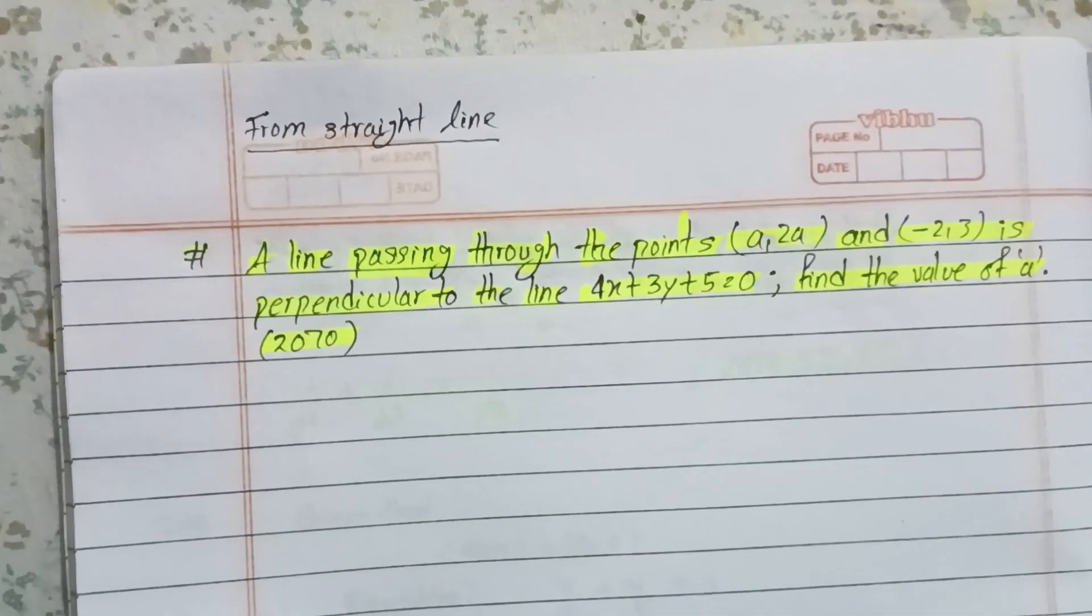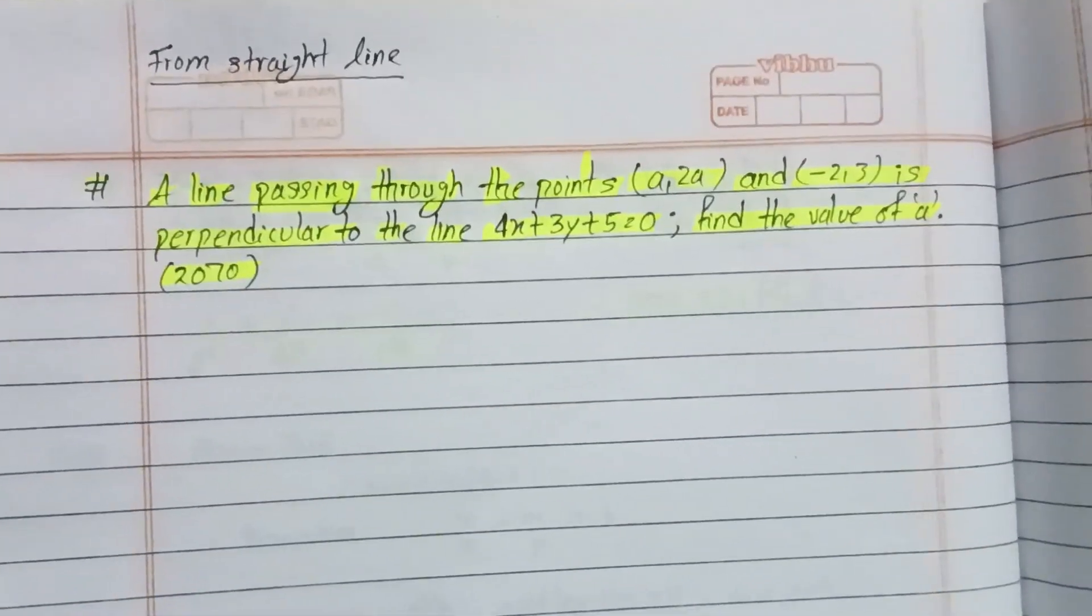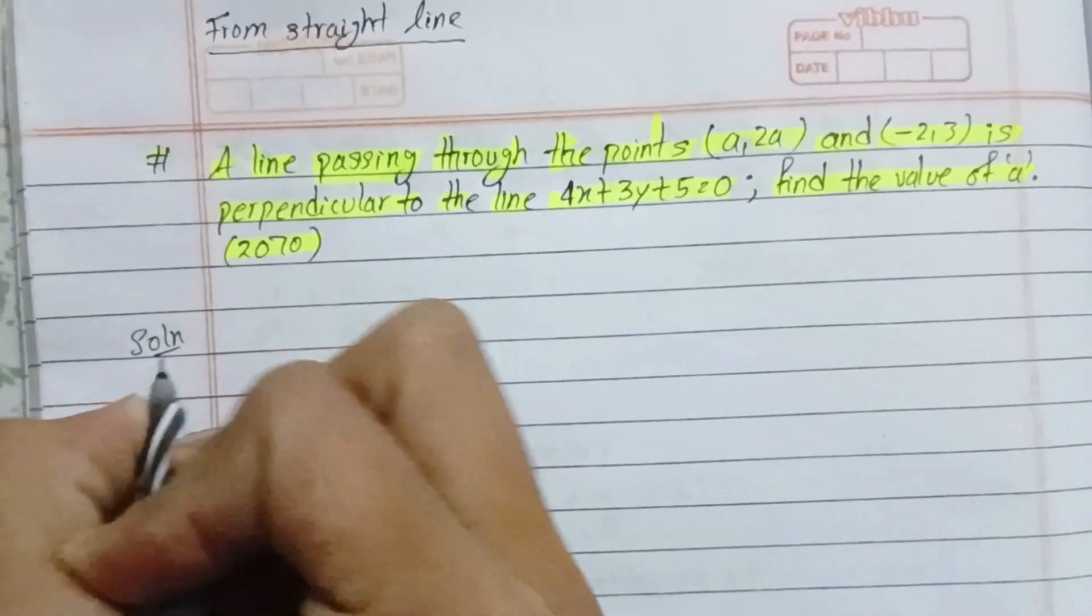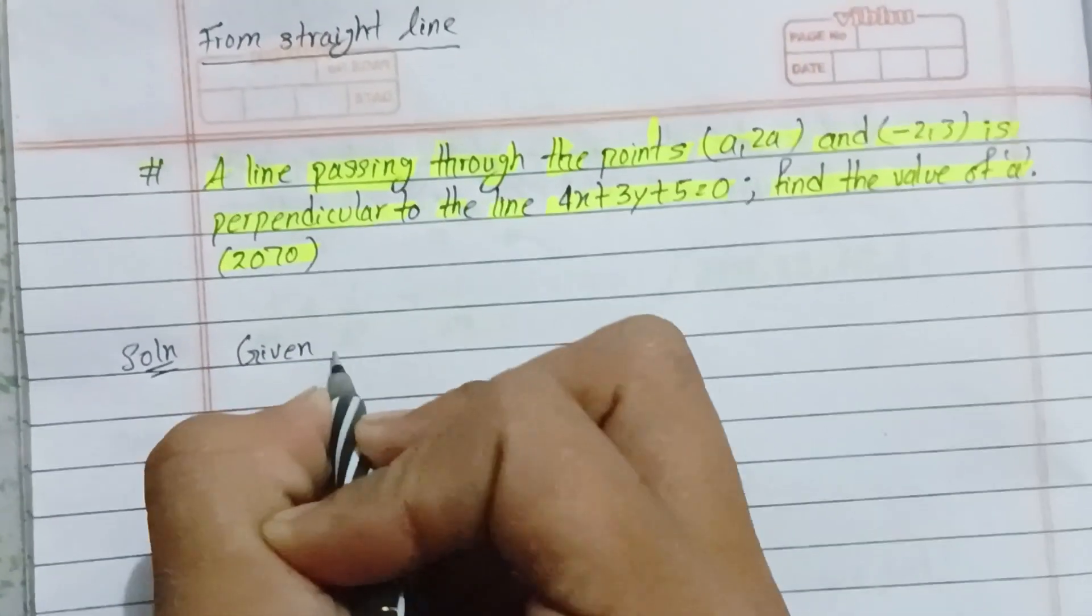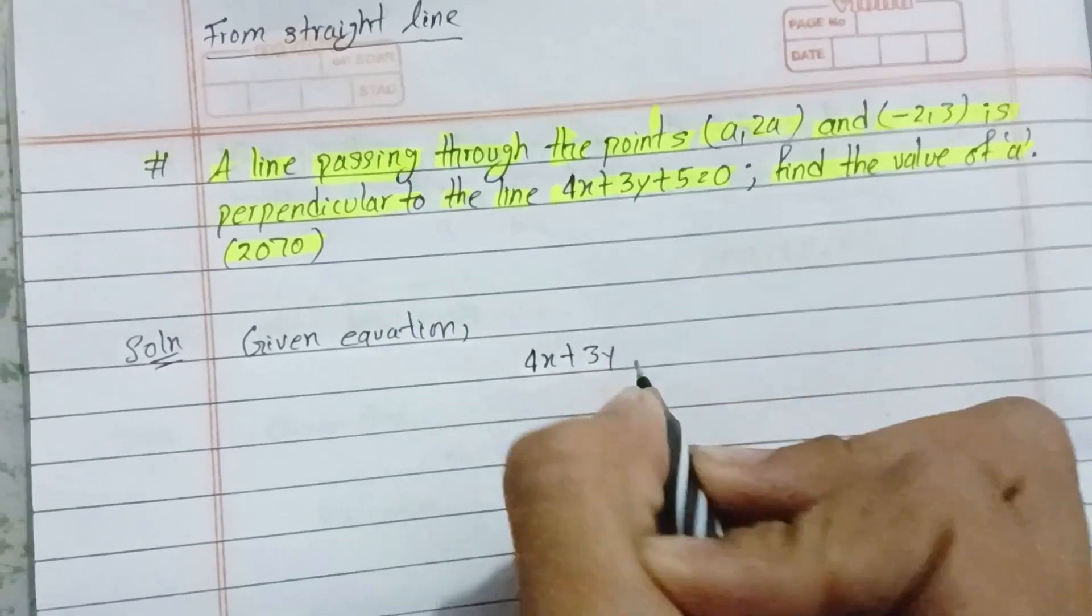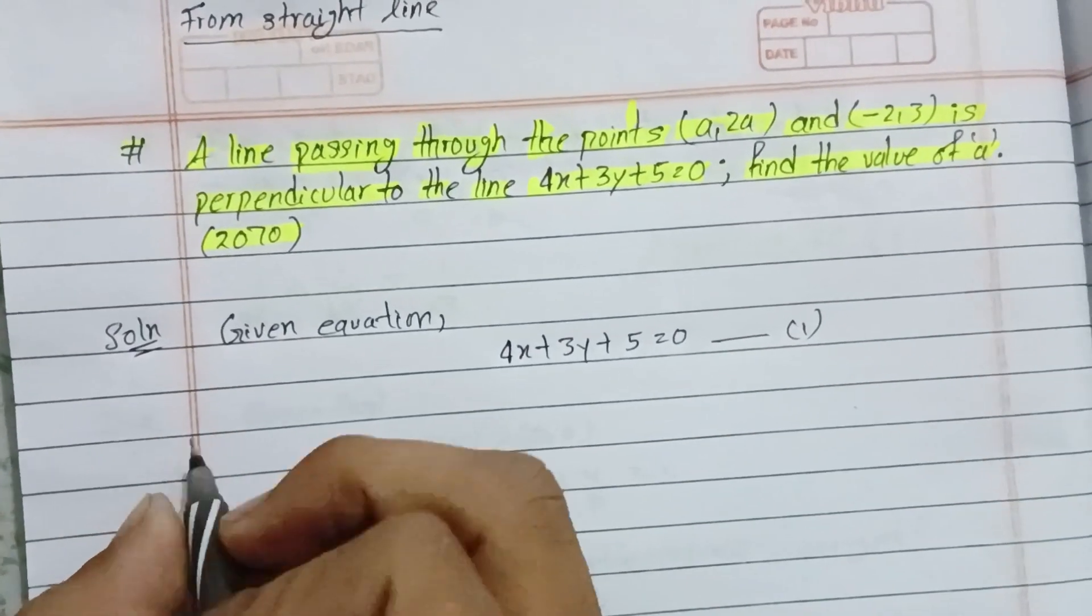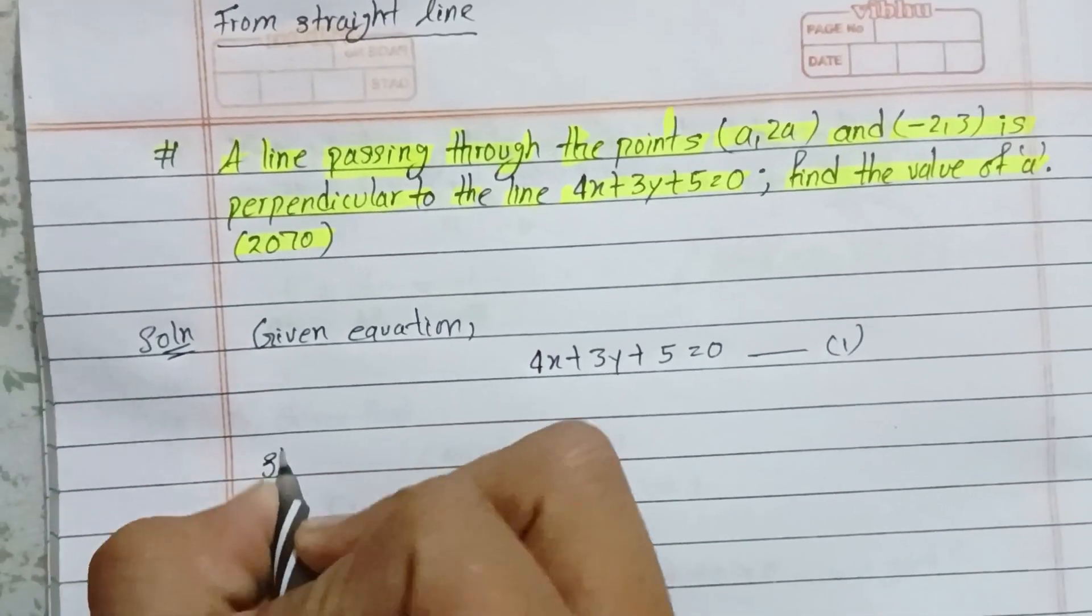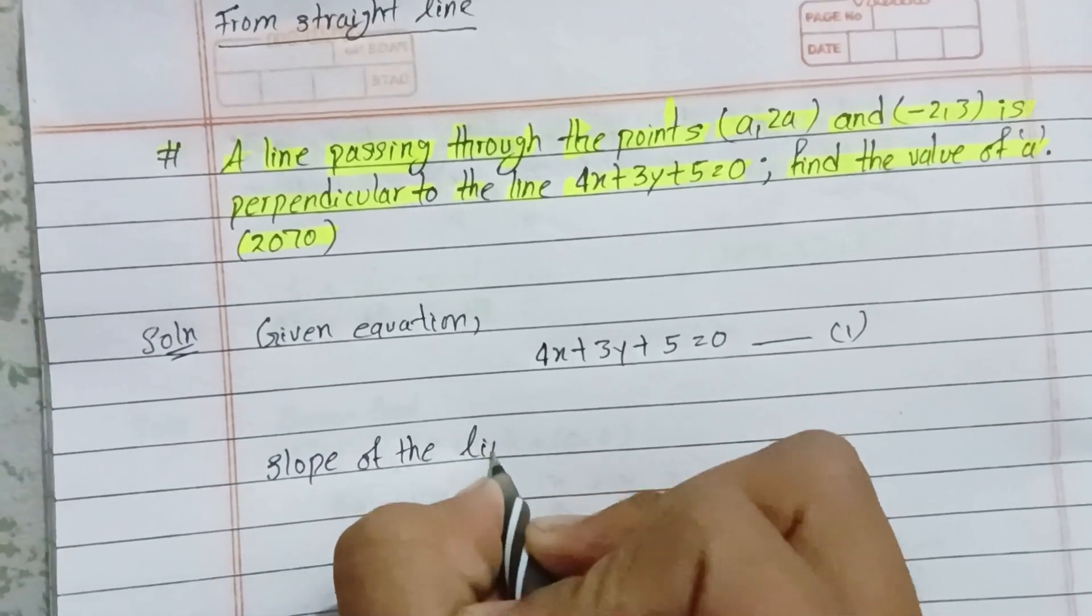So we need to find the value of a. Let me show you the solution. We have the given equation. The condition states that we need to find the slope.